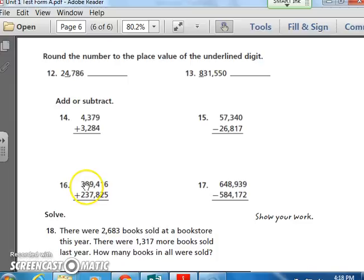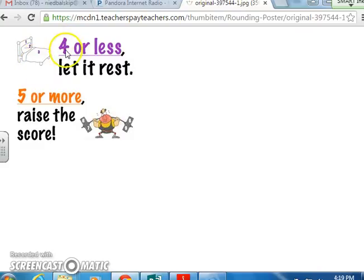All right. Now we're on twelve and thirteen. Round the number to the place value of the underlying digit. Round the number to the place value of the underlying digit. Now remember, that idea, four or less, let it rest. Five or more, raise the score. Say it in your head. Four or less, let it rest. Five or more, raise the score. You can see those numbers. One, two, three, and zero should also be there. And then we have five, six, seven, eight, nine.